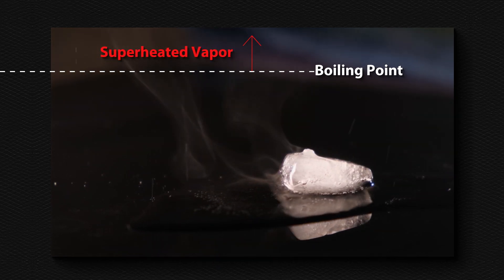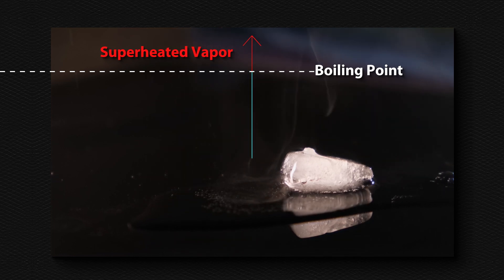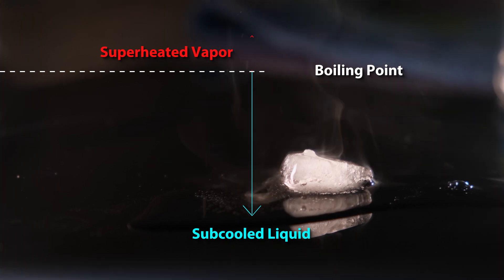When the refrigerant exists as 100% liquid, the refrigerant is below the saturated temperature or boiling point. This is known as sub-cooled liquid.